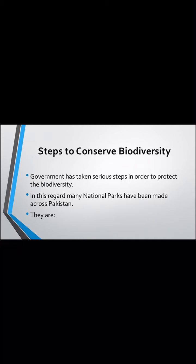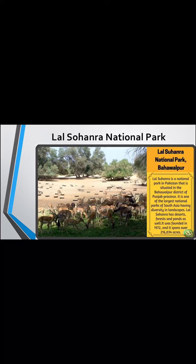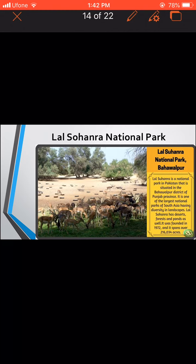Steps to conserve biodiversity: the government has taken serious steps to protect biodiversity, and many national parks have been established across Pakistan. The aim is to save endangered plants and animals. Lal Sohonra National Park is located in Bahawalpur, Punjab. It has deserts, forests, and ponds, and is one of the largest national parks in South Asia.